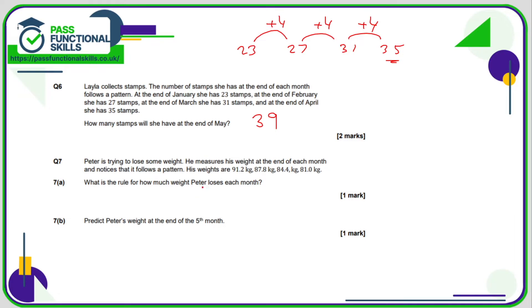In number 7, the weight loss follows this pattern: 91.2, 87.8, 84.4, 81.0, so we can see that each month he is losing 3.4 kilos.